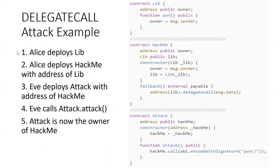Alice is our nice developer and Eve is the evil attacker. Alice has created lib and deployed it. She's created this vulnerable contract called hack me that is referring to lib. And you can see in her payable function, she's using delegate call to delegate her ownership over into lib.